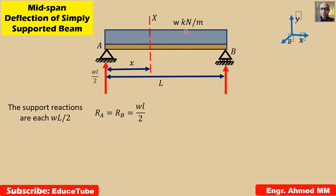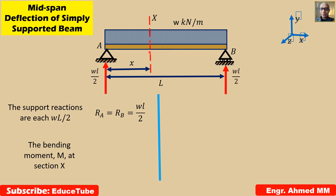W is uniformly loaded, so W multiplied by L is the total load, and it is divided on both supports. So it will be WL by 2: Ra equal to Rb. I have taken a section x to find the moment at this section. We can write Mx equal to WLx by 2 minus Wx squared by 2, because WL by 2 is the reaction multiplied by x, and Wx squared by 2 accounts for the distributed load.